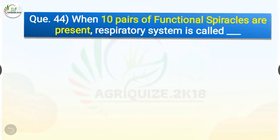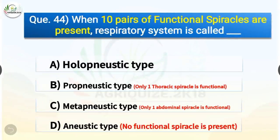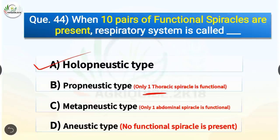Question number 44. When 10 pairs of functional spiracles are present, the respiratory system is called what? The options are holopneustic type, propneustic type, metapneustic type, or apneustic type. The correct answer is option A, holopneustic type. When only one thoracic spiracle is functional, it is propneustic type. When only one abdominal spiracle is functional, it is metapneustic type. When no functional spiracle is present, it is apneustic type.